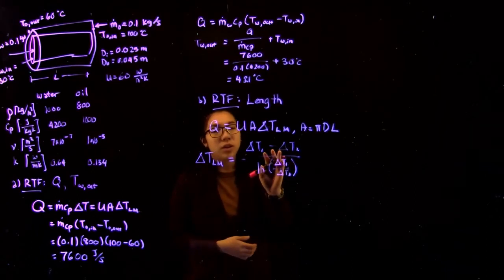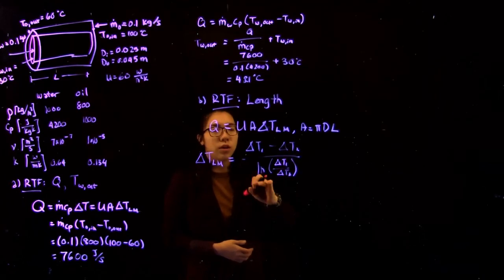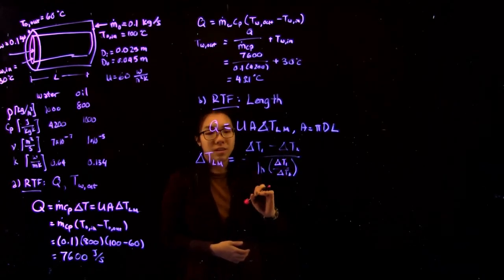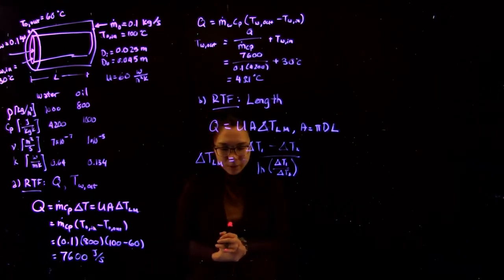If you forget this equation, you can also flip these because if you had delta T2 minus delta T1 over ln of delta T2 over delta T1, the negative signs would just cancel out and we'll get the exact same value for the log mean temperature.